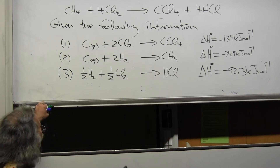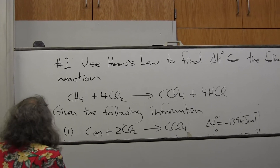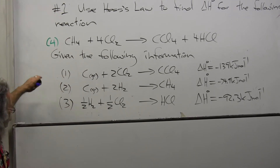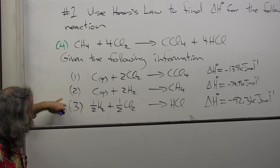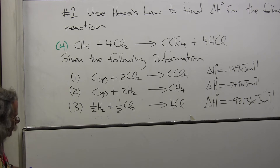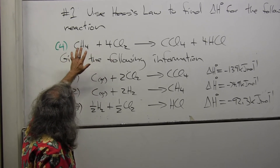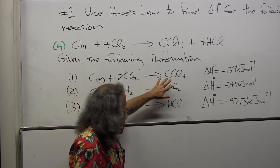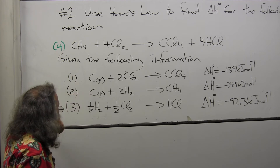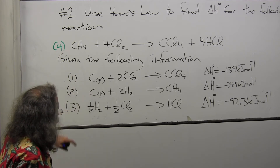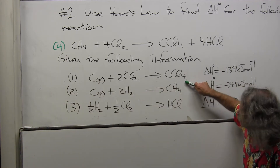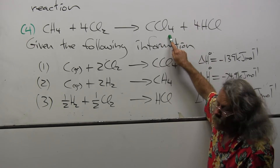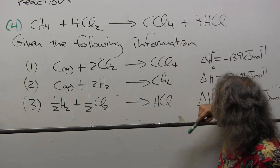The first thing I want to do is number the target reaction — I will call it reaction four. The key to expressing reaction four in terms of reactions one, two, and three is to look for the reactants and products in reaction four and find those same materials in the given reactions. For example, in reaction one I have carbon tetrachloride as a product, and carbon tetrachloride is indeed a product in reaction four — one CCl4 on each side.